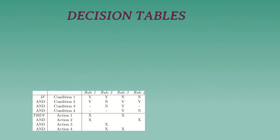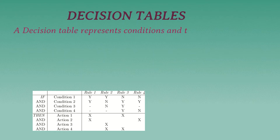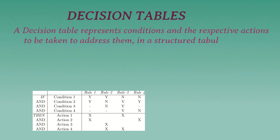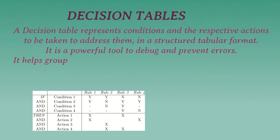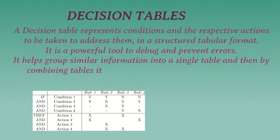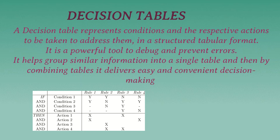A decision table represents conditions and the respective actions to be taken to address them in a structured tabular format. It is a powerful tool to debug and prevent errors. It helps group similar information into a single table and, by combining tables, delivers easy and convenient decision making.